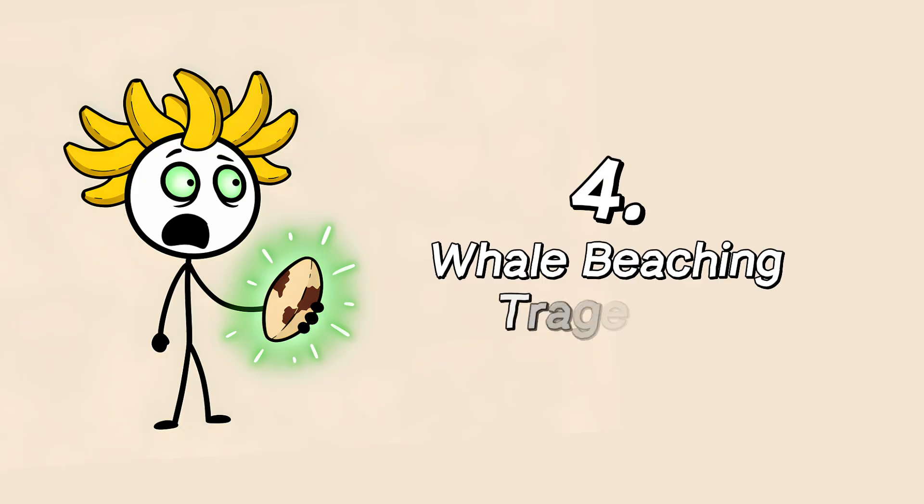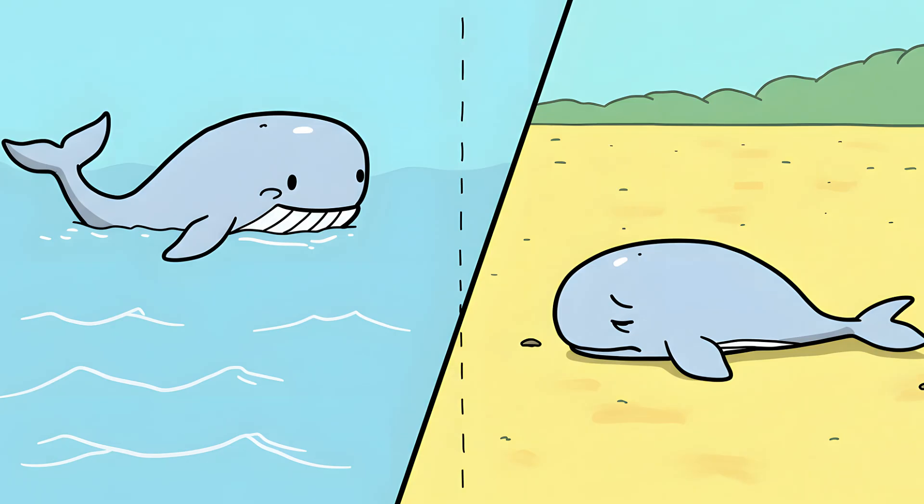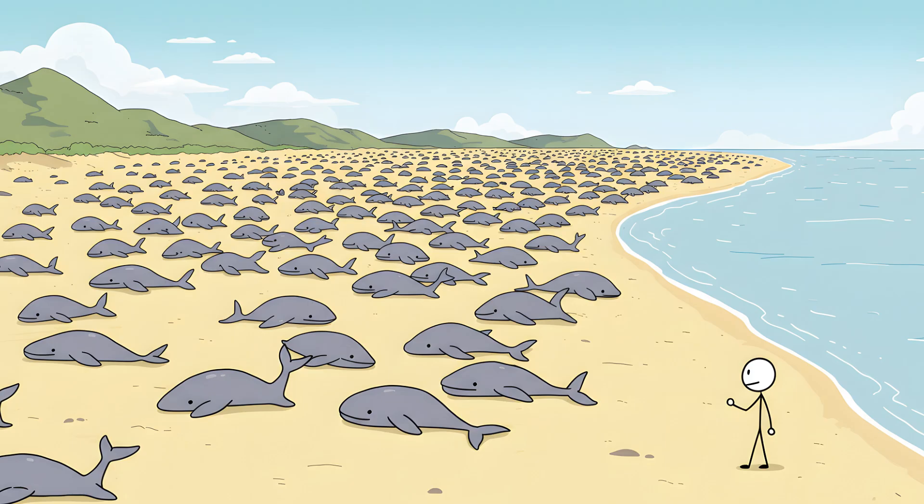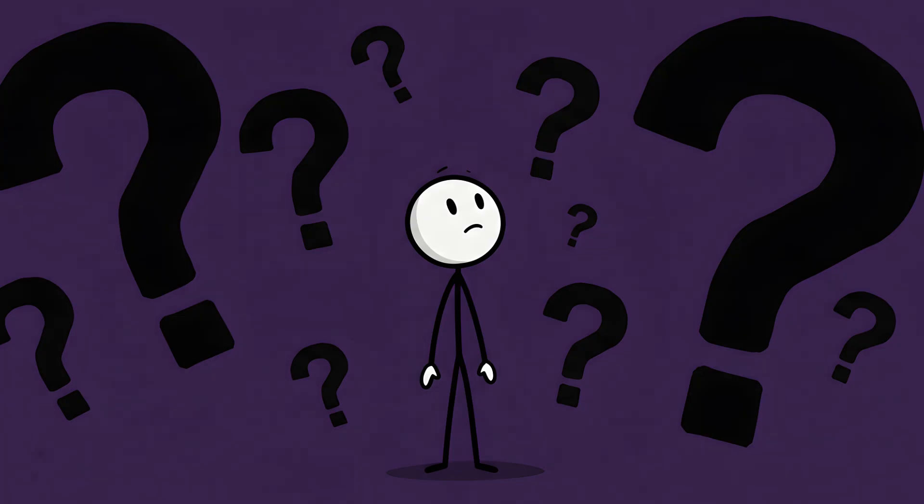Number four, whale beaching tragedies. There is almost nothing in nature as sad and profoundly confusing as a mass stranding of whales or dolphins. One minute, they are majestic, intelligent creatures navigating the vastness of the ocean. The next, they are helpless, dying on a beach, their massive bodies slowly being crushed under their own weight. And it's not just one lost animal. It's dozens, sometimes hundreds, all making the same fatal error at the same time. Rescuers will work for hours, pushing these giants back into the water, only to watch them turn around and beach themselves again, as if drawn by some invisible suicidal force. The why is one of the most haunting mysteries of the animal kingdom.